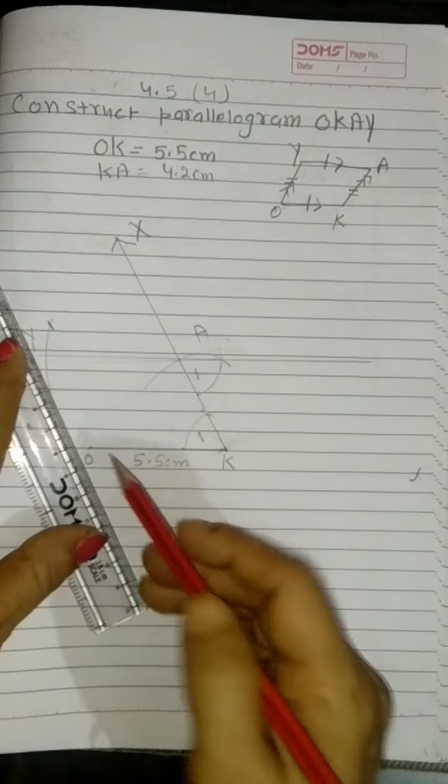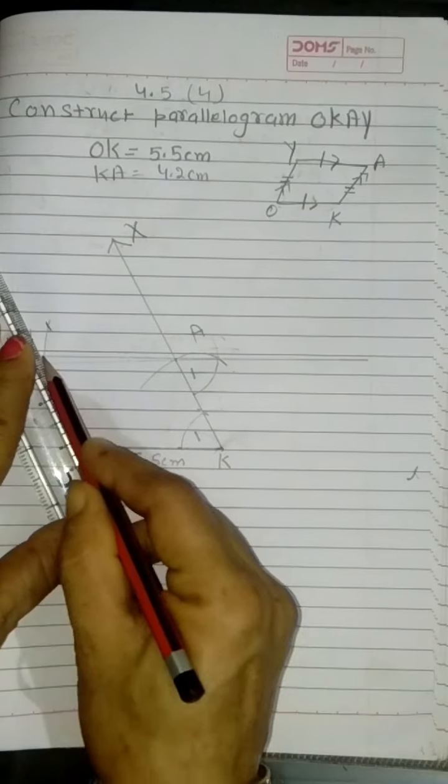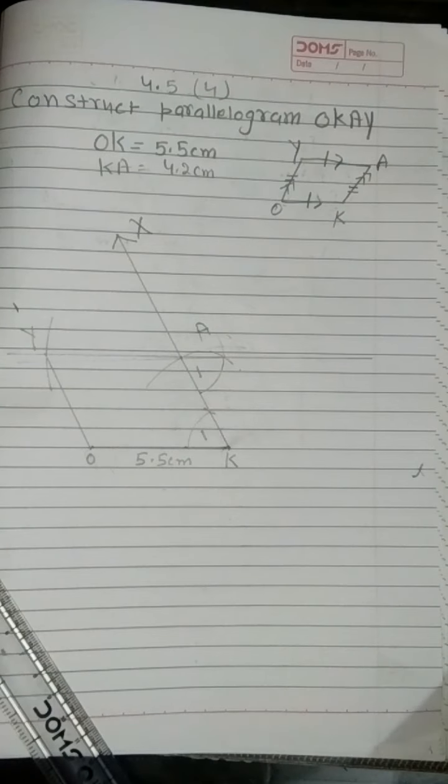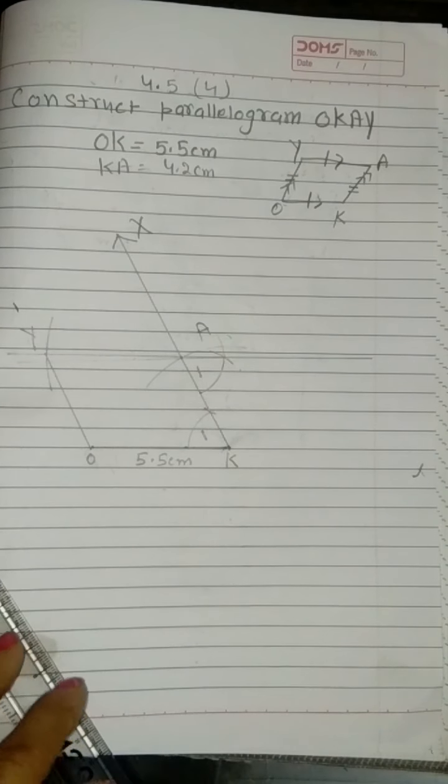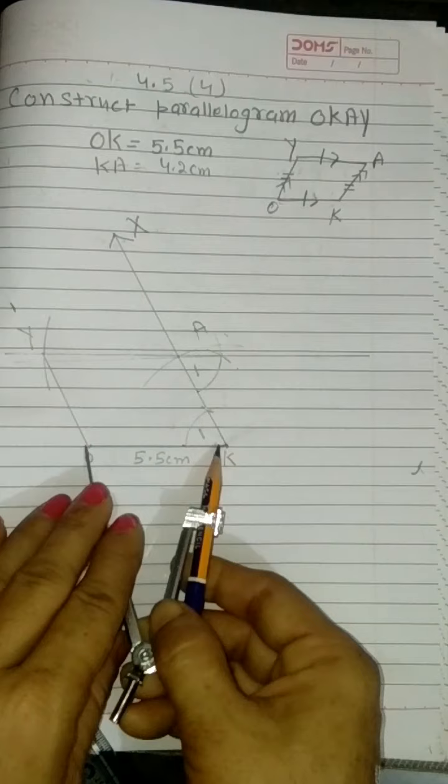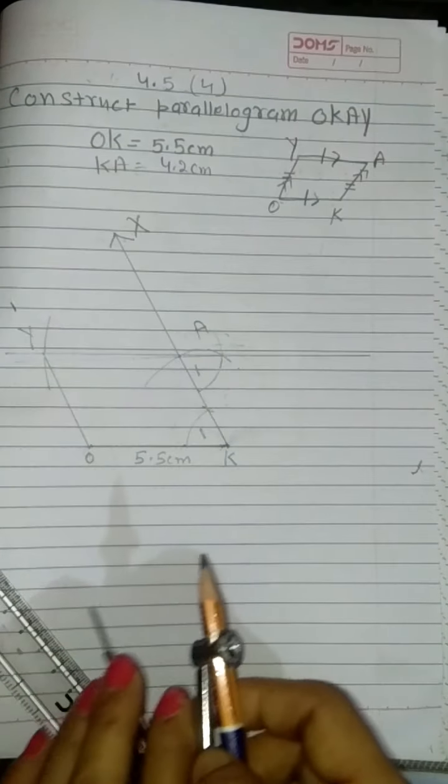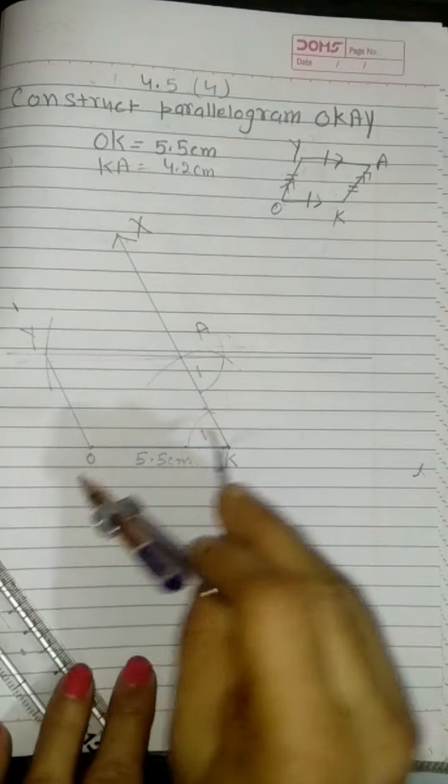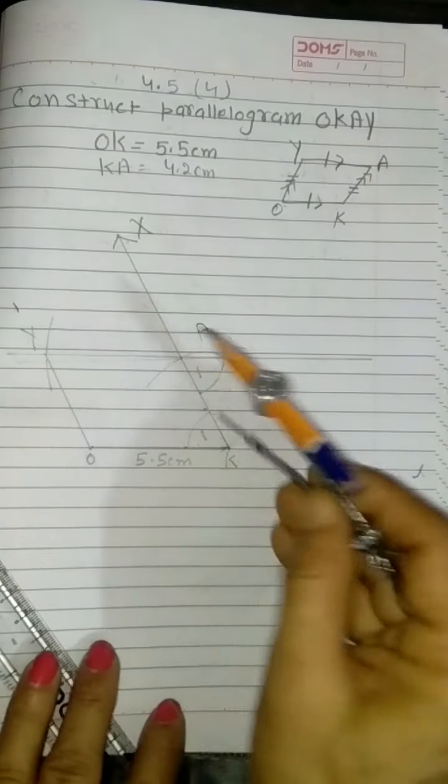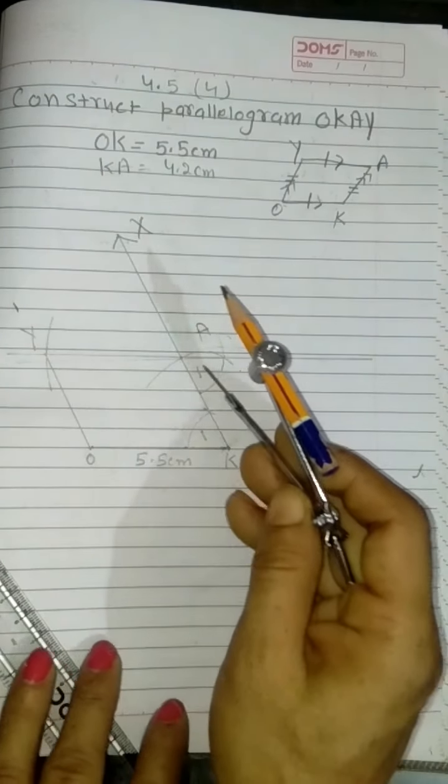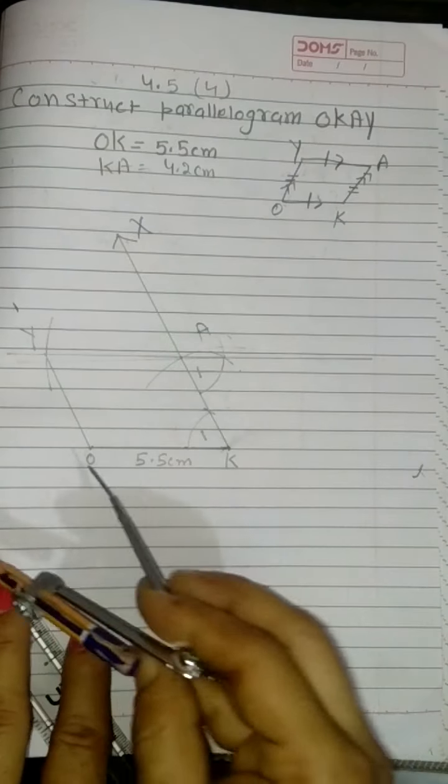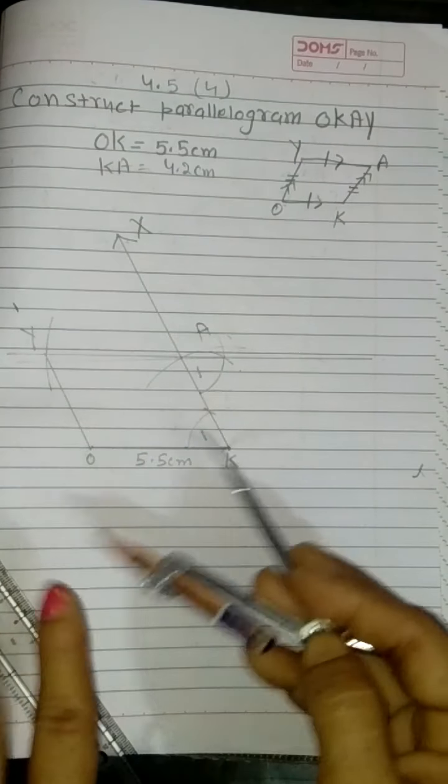So I will join here OY. So what I did: This side OK is equal to YA. And this side OK is parallel to YA because alternate angles are equal. So this is a parallelogram - opposite sides are equal and parallel.